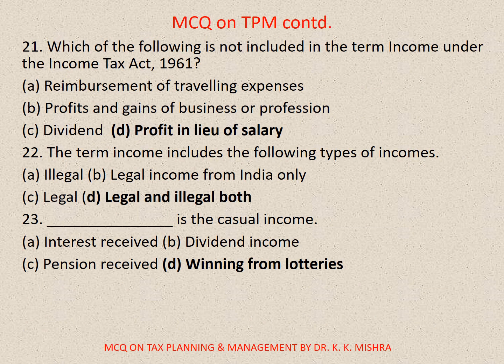Question 21: Which of the following is not included in the term income under the Income Tax Act 1961? The correct option is D. Profit in lieu of salary. Question 22: The term income includes the following types of income — A. Illegal, B. Legal income from India only, C. Legal, D. Legal and illegal both. The correct option is D. Legal and illegal both.